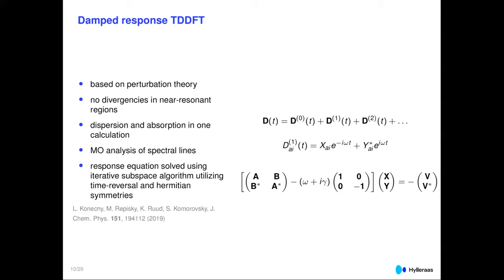The basic principles of damped response theory: we do a perturbation expansion of the time-dependent electron density in orders of the applied perturbation — such as the applied electric field. We determine the perturbed electron densities through parameters X and Y from what many would call TDDFT equations, or linear response equations. The key point in the damped response is the imaginary gamma factor — a phenomenological parameter that provides the lifetime in the calculation.